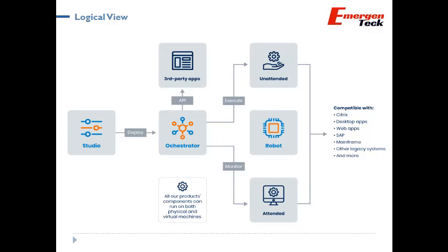Let's put everything together and understand the logical view of how things work. Studio is the place where we build and configure our bot. After this, we deploy to the Orchestrator. Orchestrator has integration with third-party apps — for example, it might integrate with CyberArk through a third-party API. Then it connects with either attended bots or unattended bots. In the case of unattended bots, Orchestrator executes them automatically. For attended bots, they are triggered and executed by human agents. Both bot types have the capability to interact with Citrix, Desktop, Website, or any kind of application.